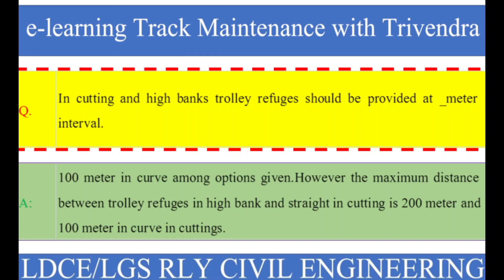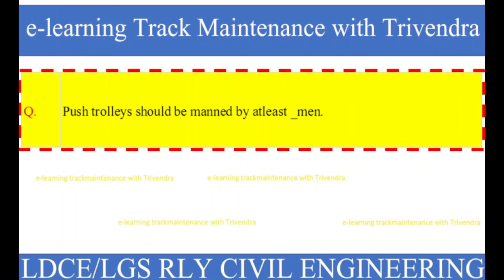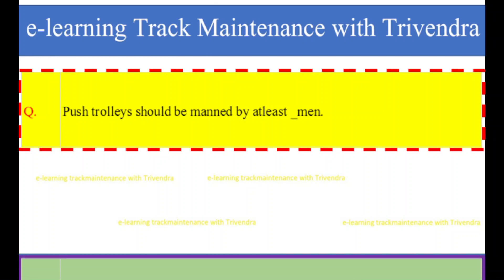Question number 60: Push trolleys should be manned by at least how many men? The right answer is 4.